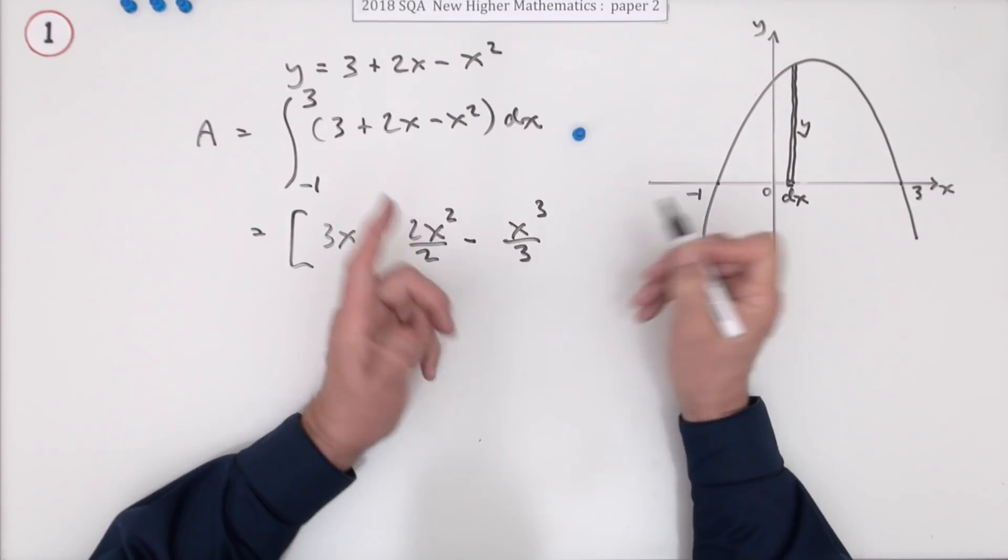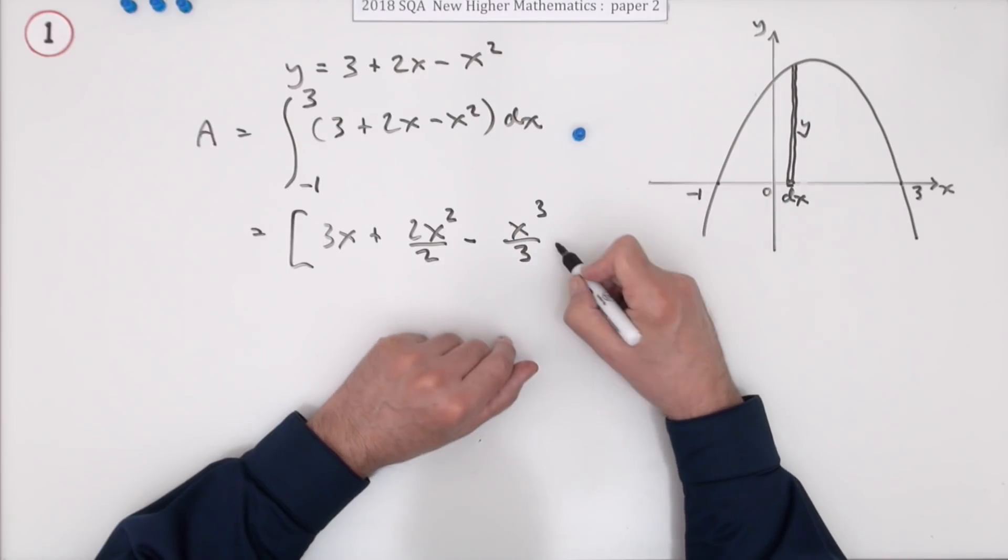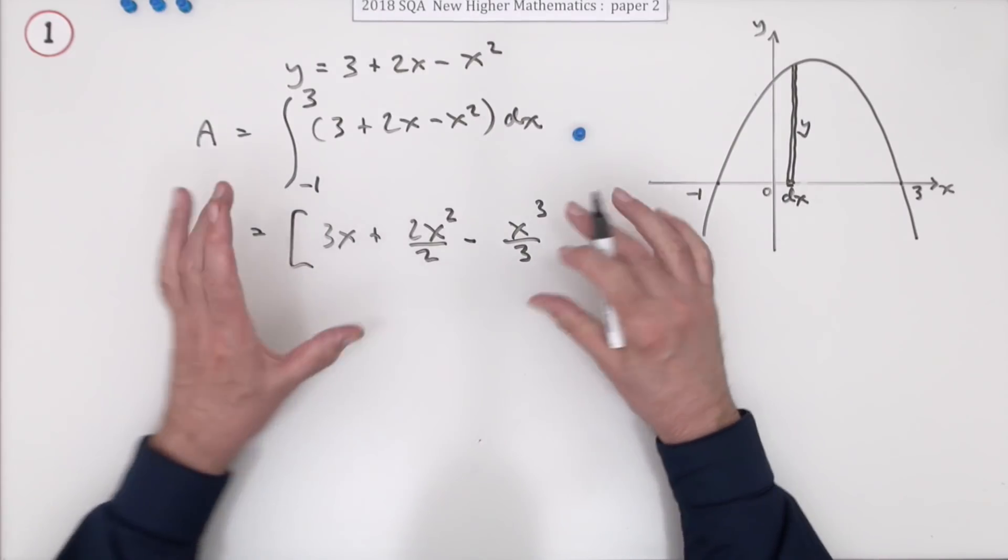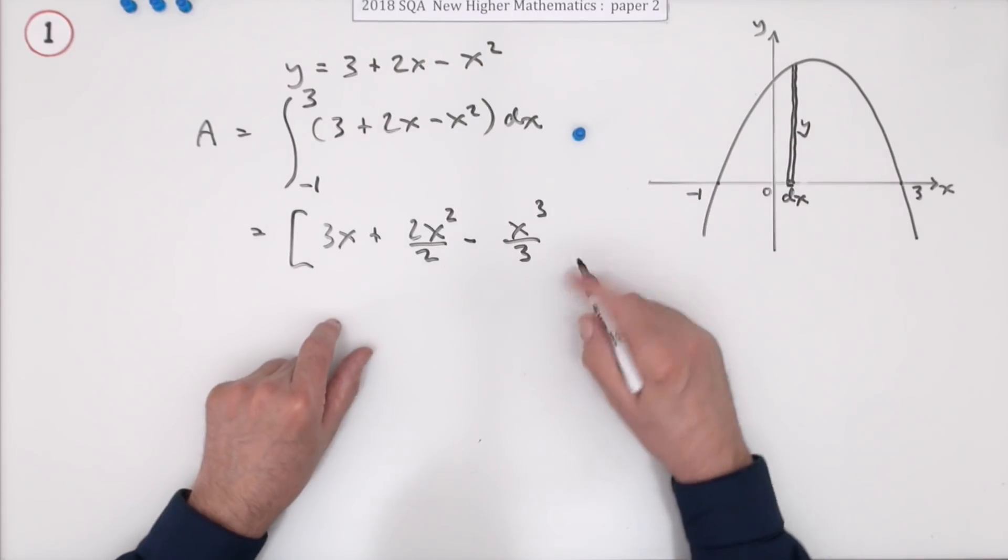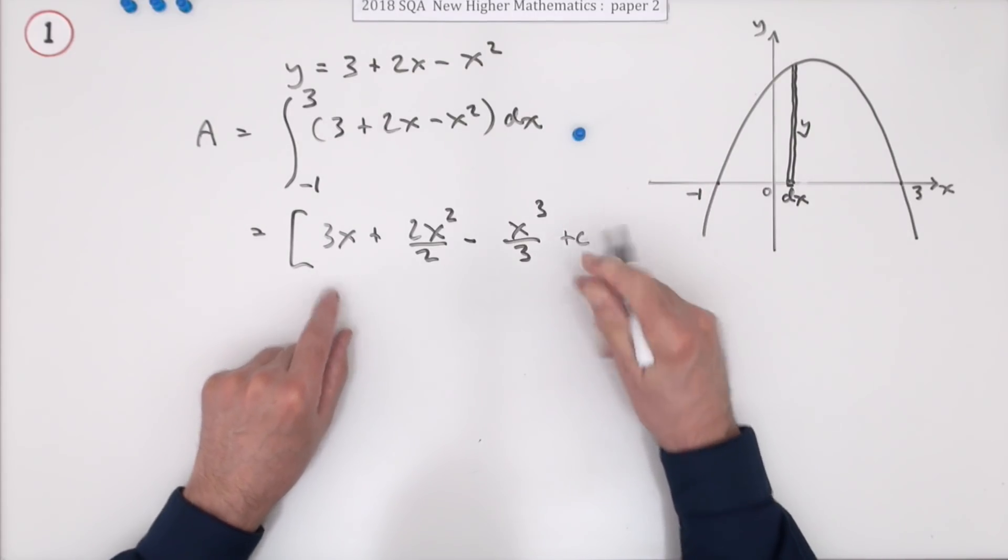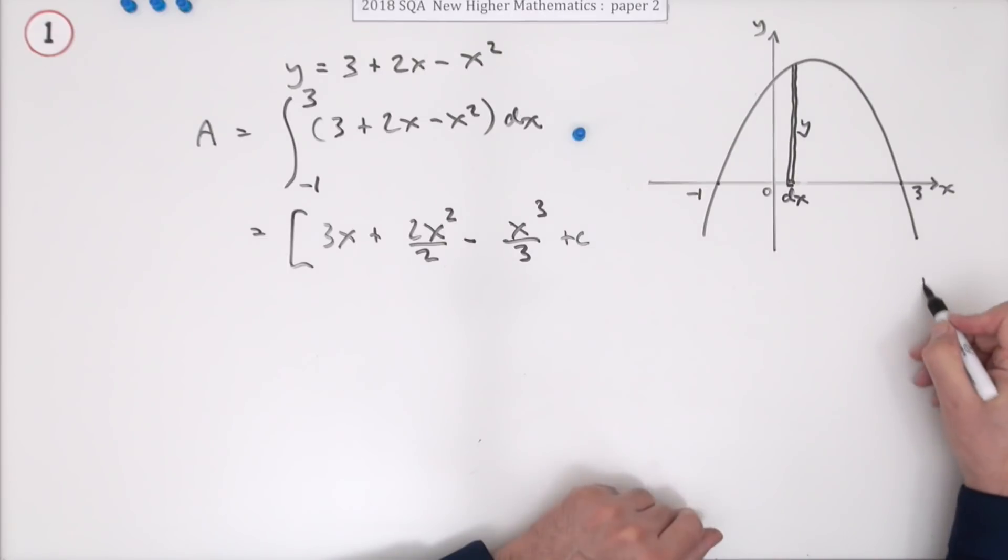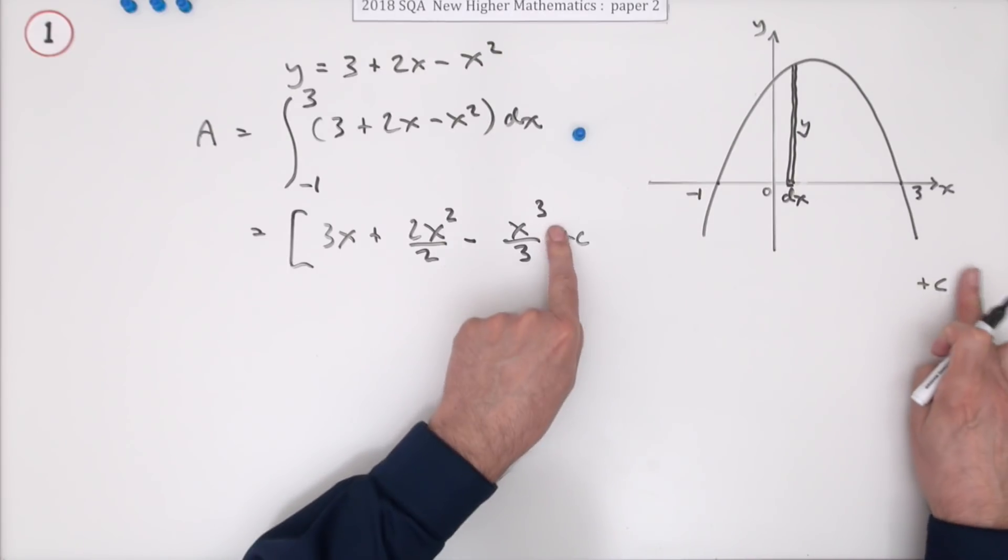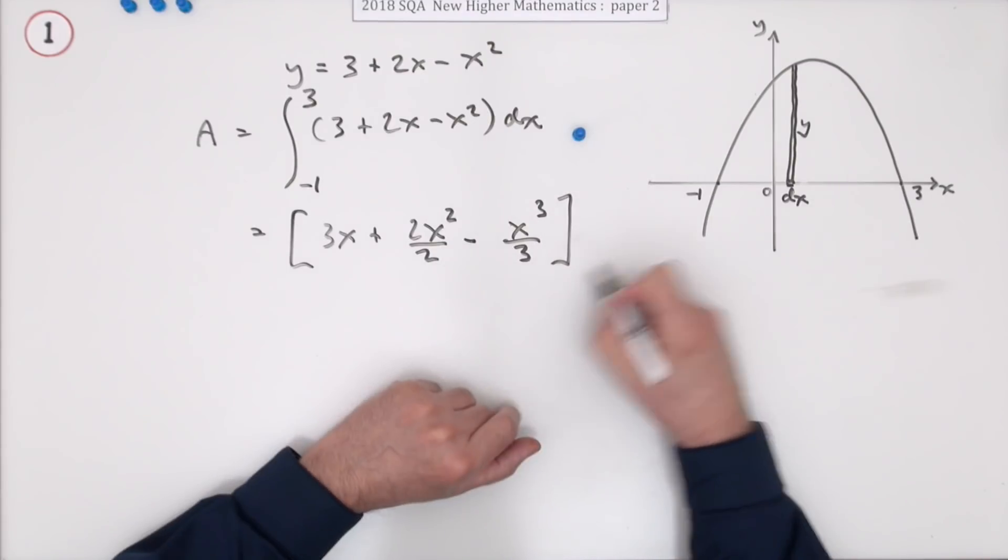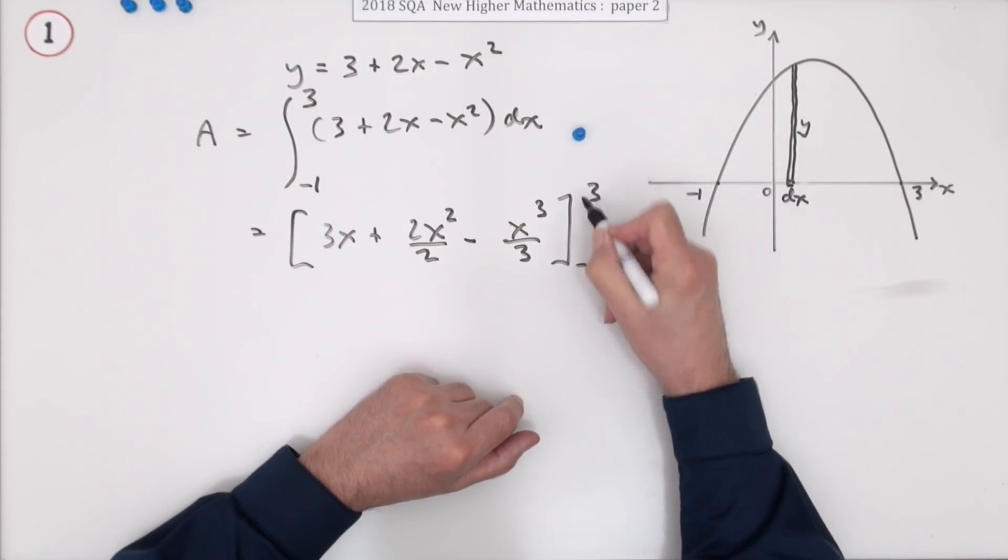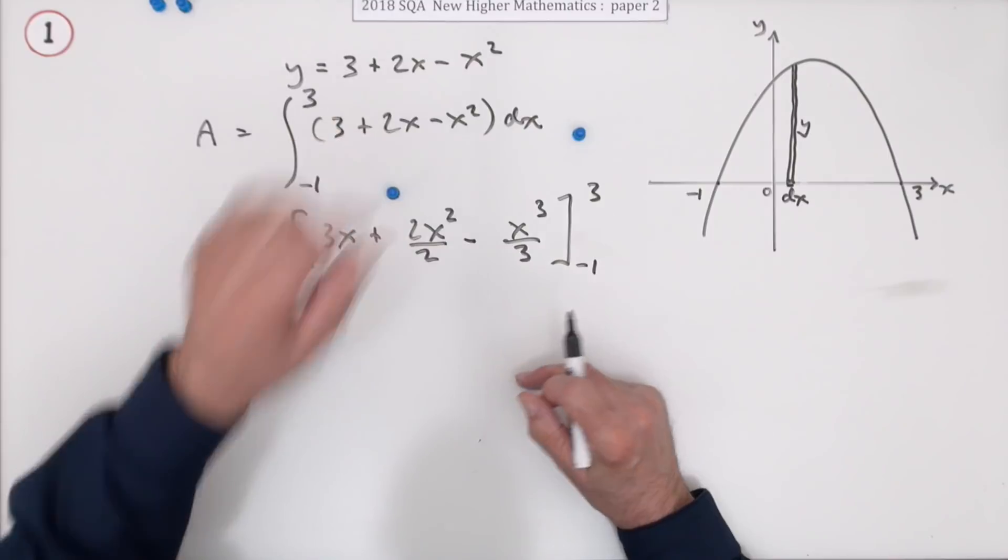Now, you could put in a plus c. That wouldn't be wrong. You're not going to be penalised for that. But it'll make no difference because you know you're going to evaluate it twice and subtract the two answers. So if you did have a plus c, when you worked it out again with the other plus c and subtracted them, they would just cancel out. So integrate it, and then you're going to evaluate it. But integrating it gets a mark.